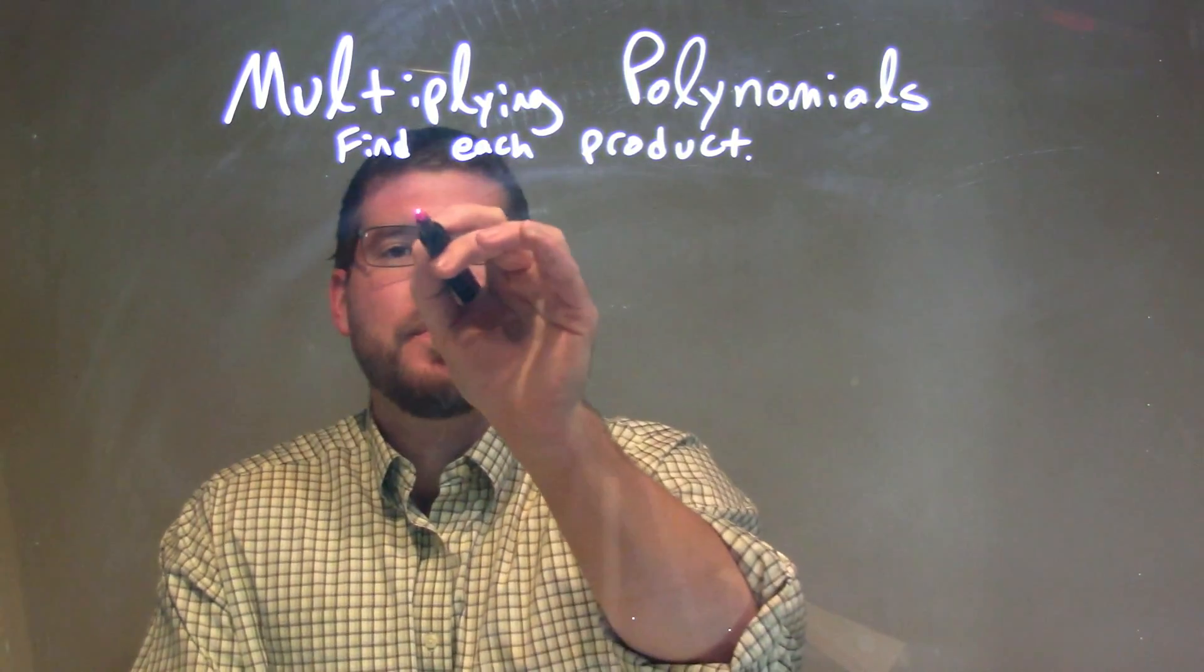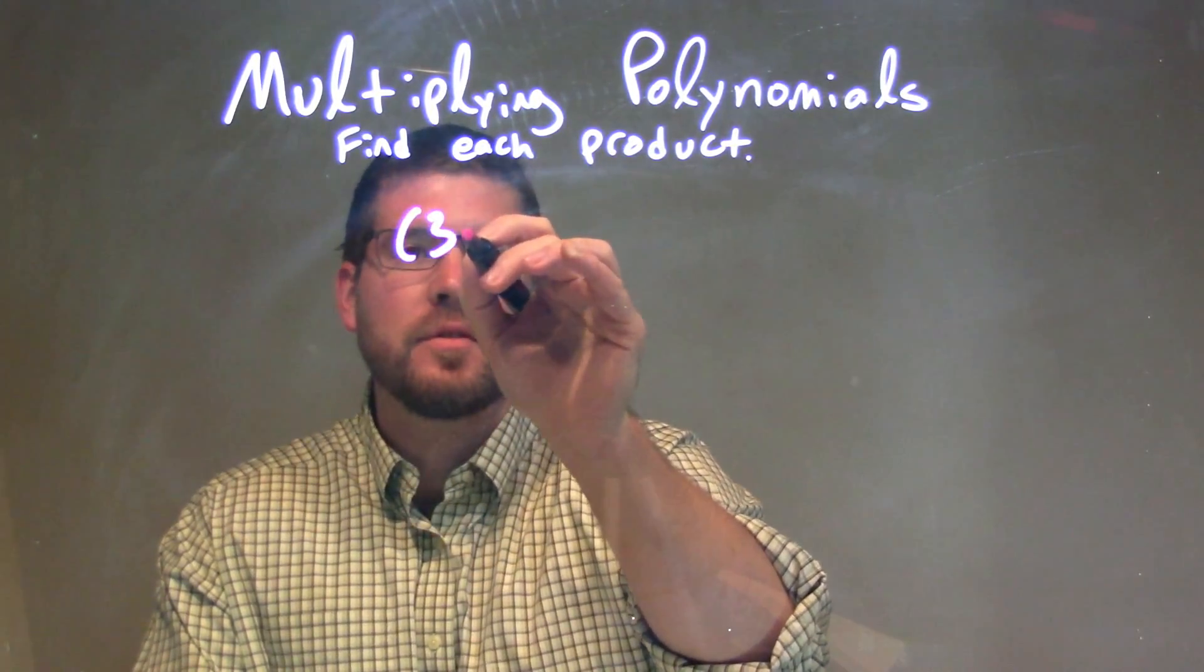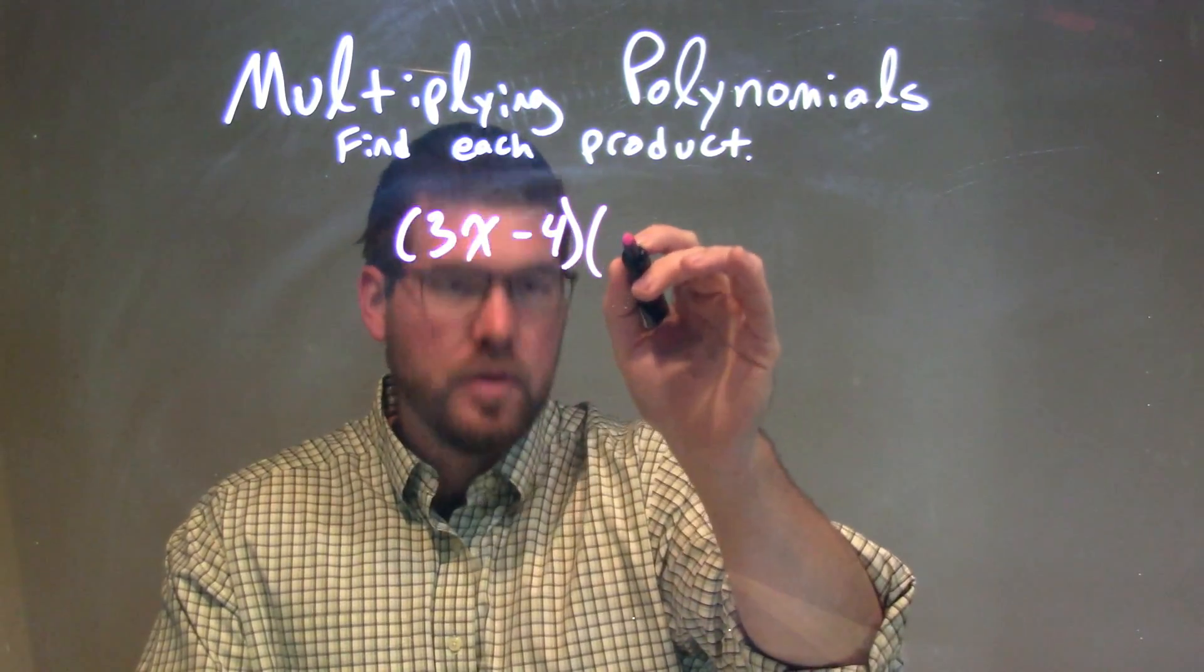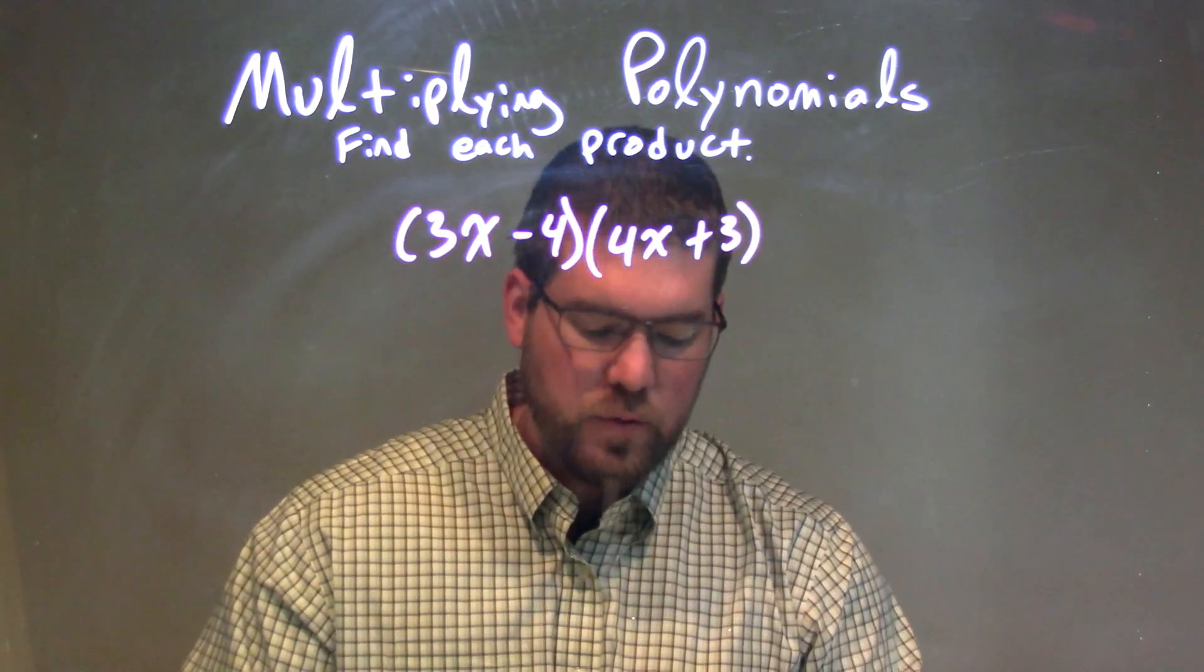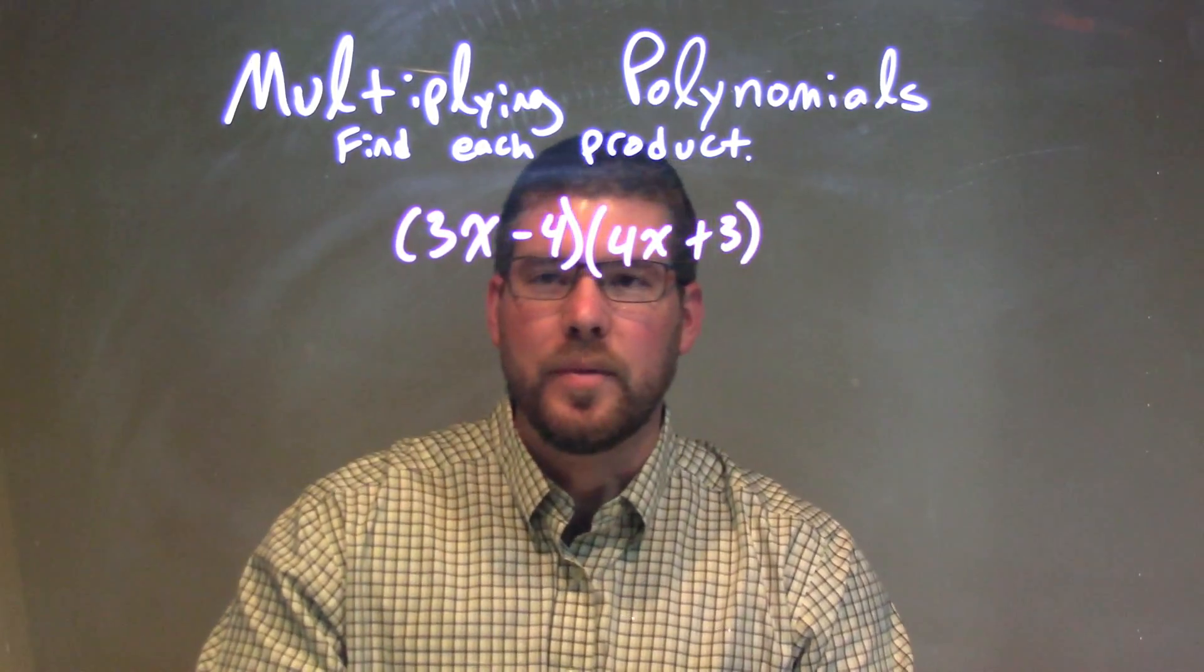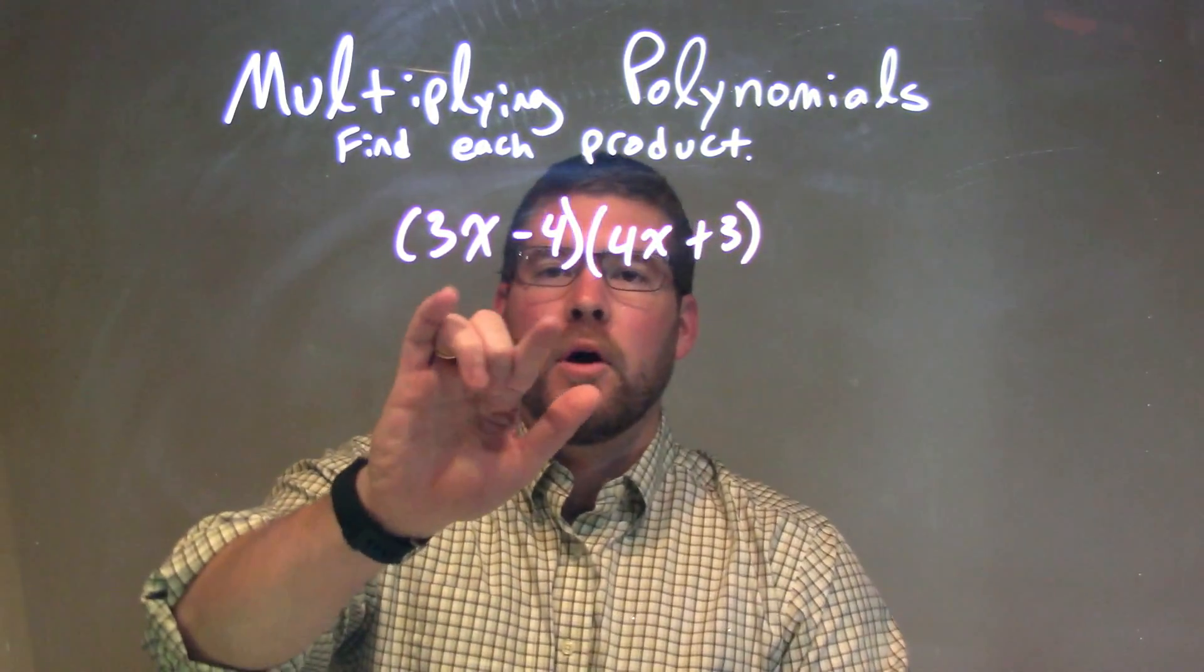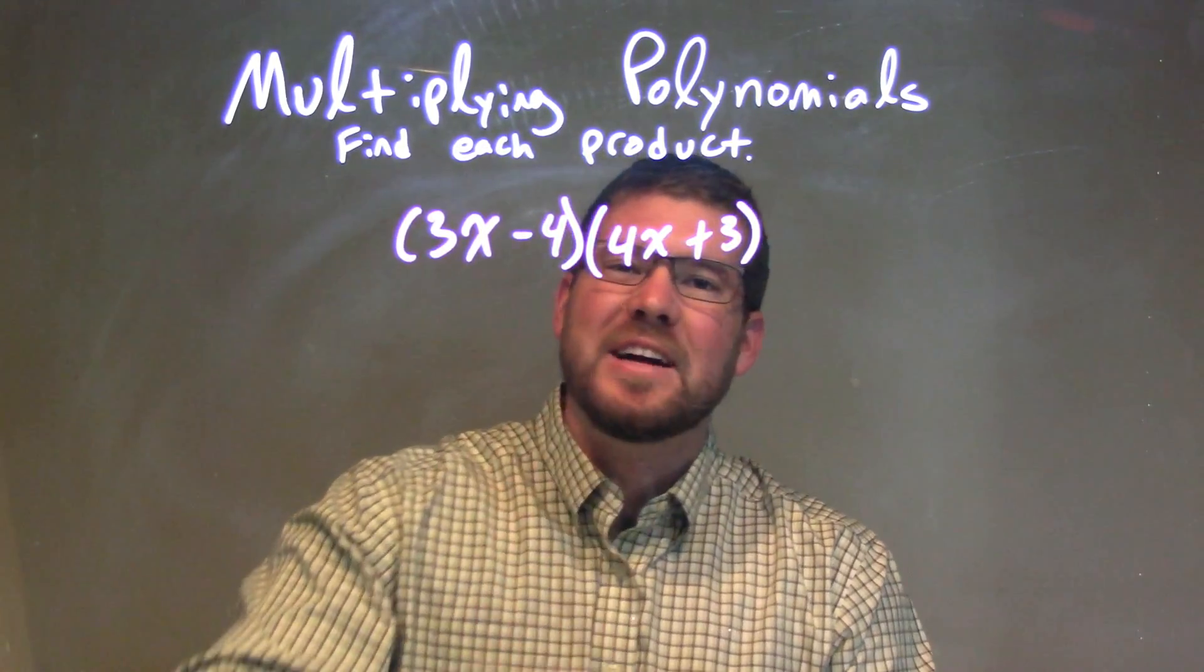So if I was given this problem, 3x minus 4 times 4x plus 3. We need to multiply all parts of our first parenthesis by all parts of our second parenthesis.